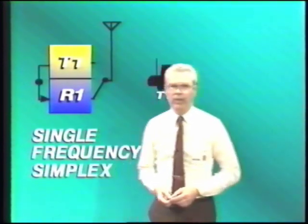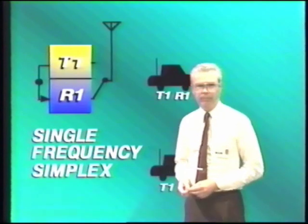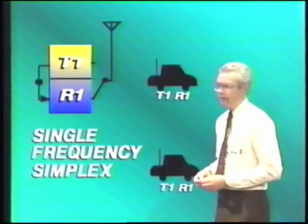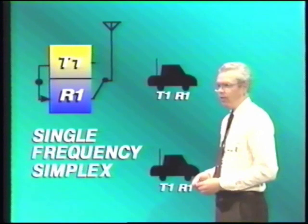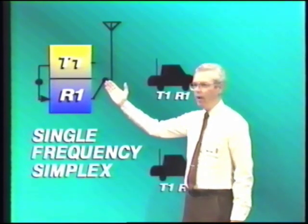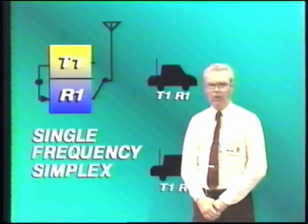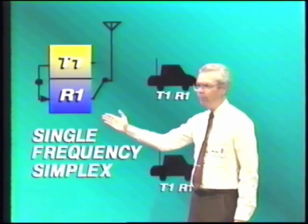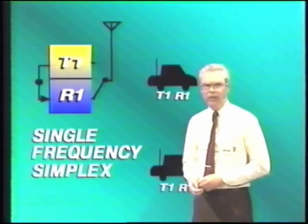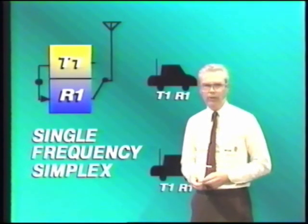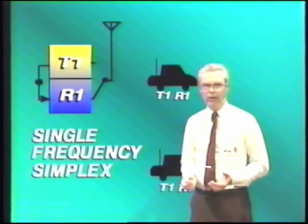Probably the most commonly used radio system is the single-frequency simplex, and the diagram looks like this. The base station has a transmitter, let's say it's on frequency T1, and the receiver also has frequency T1 as well. In the simplex station, the receiver is normally disabled, or muted as we say,